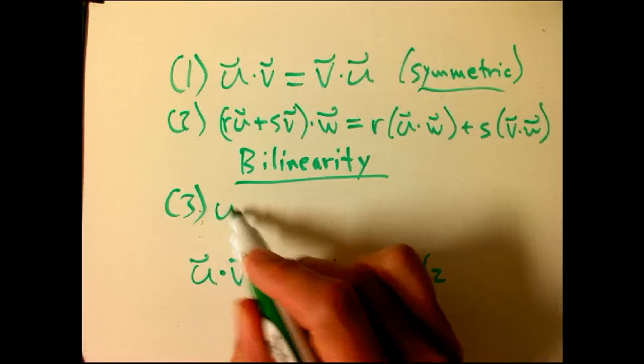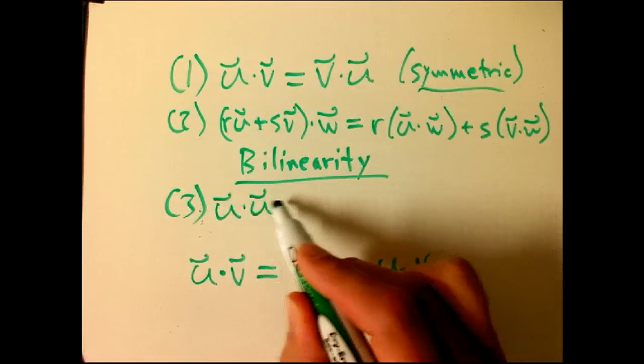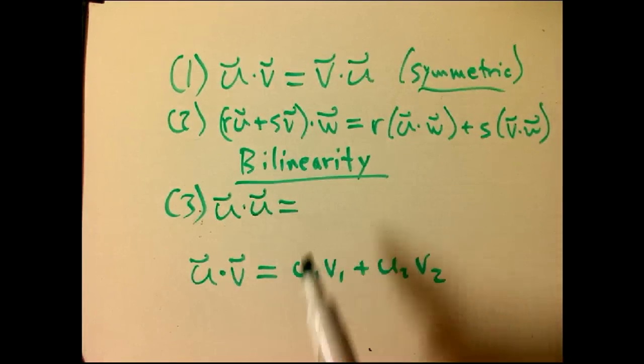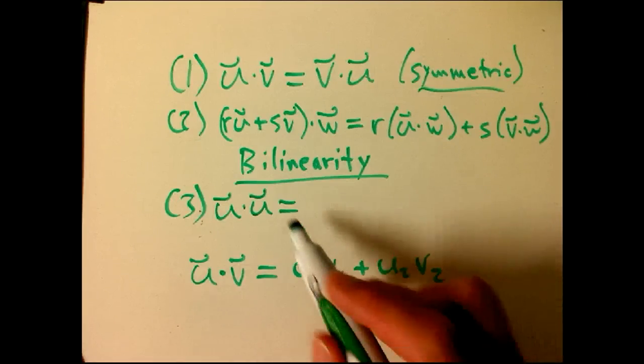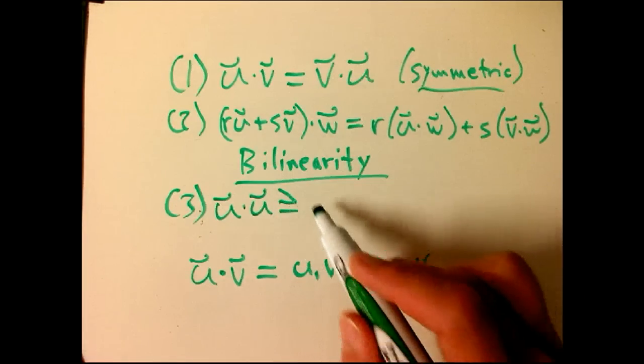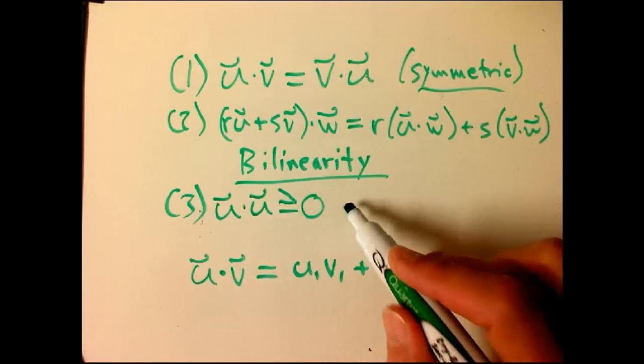Now, here's another fact. It's pretty clear from the definition. If you take U dot itself, you're going to get U1 squared plus U2 squared, and so that's not about an equality, it's about a greater than equal. That's greater or equal to zero, always.